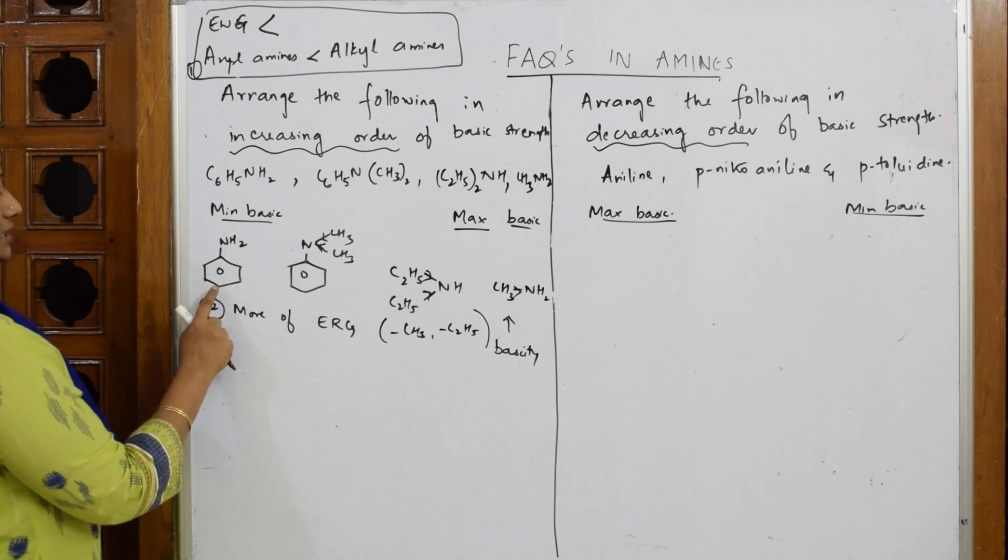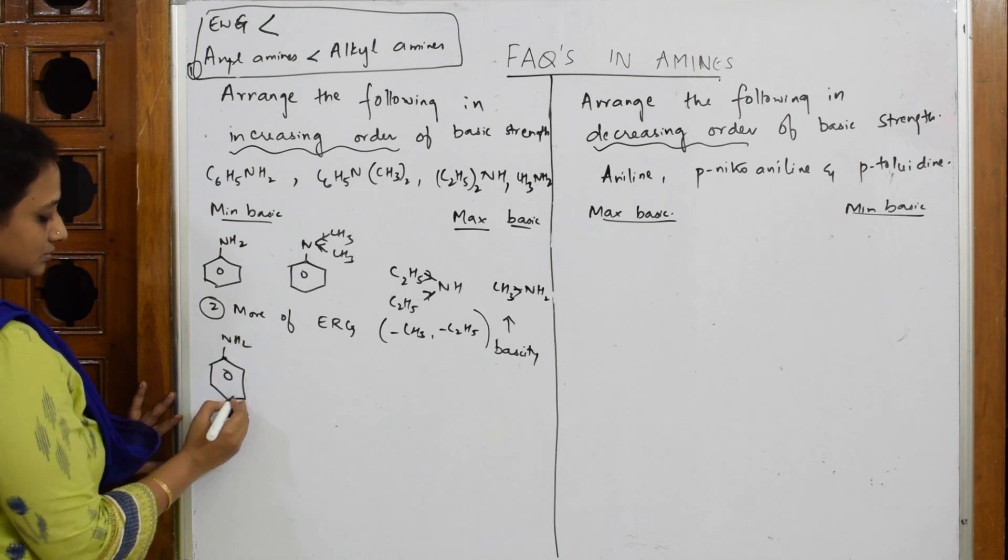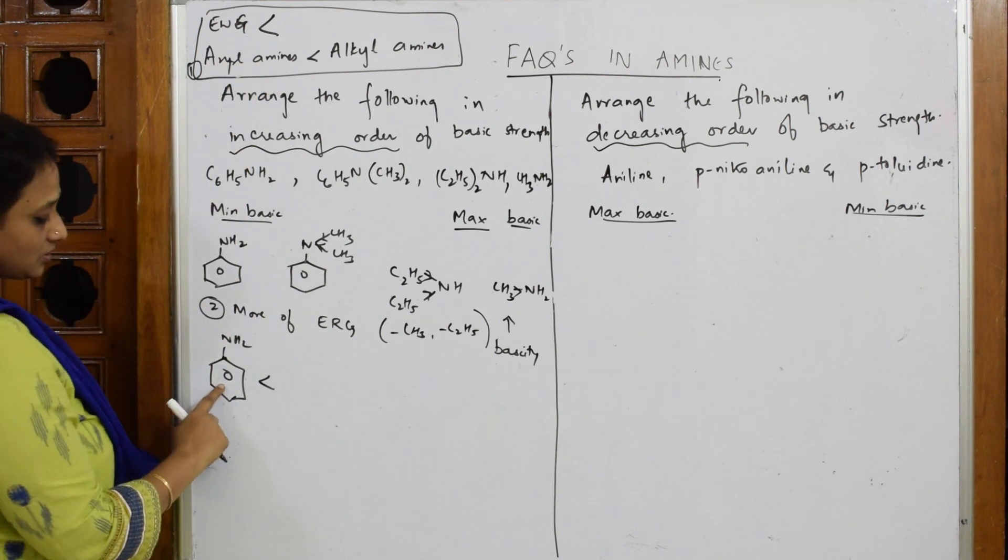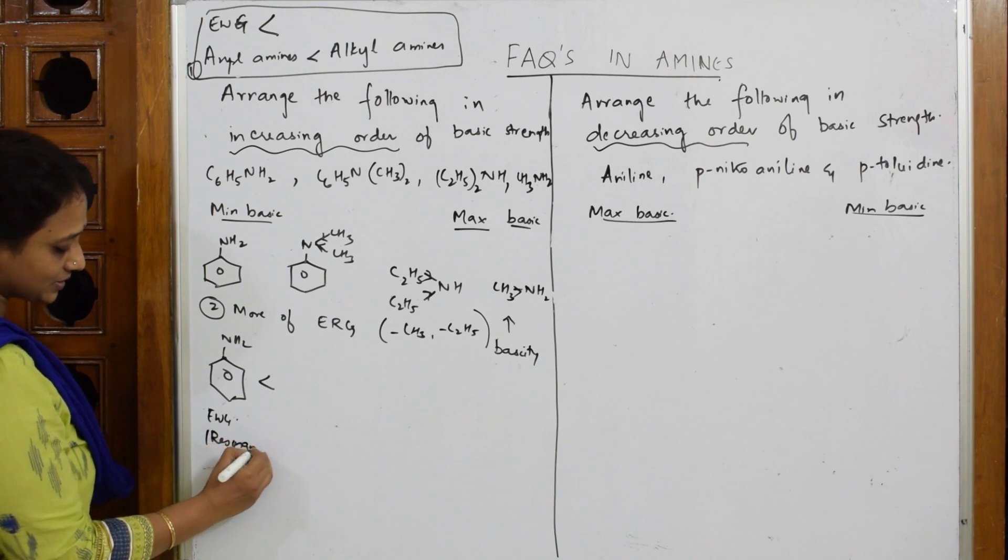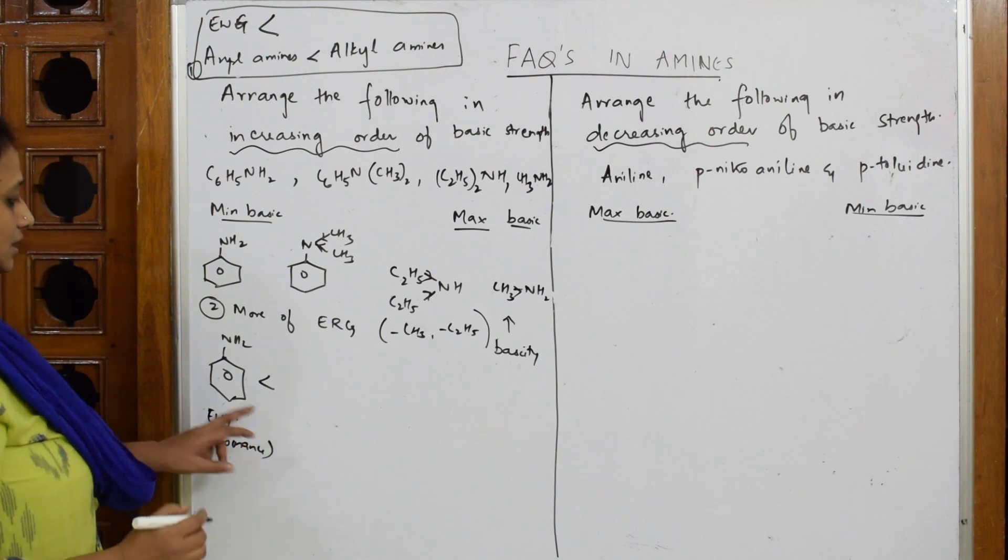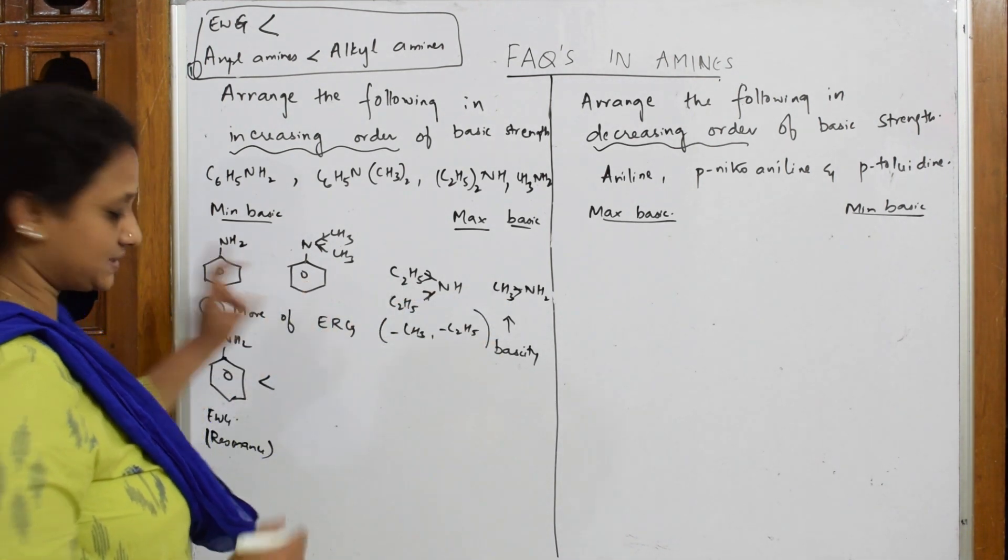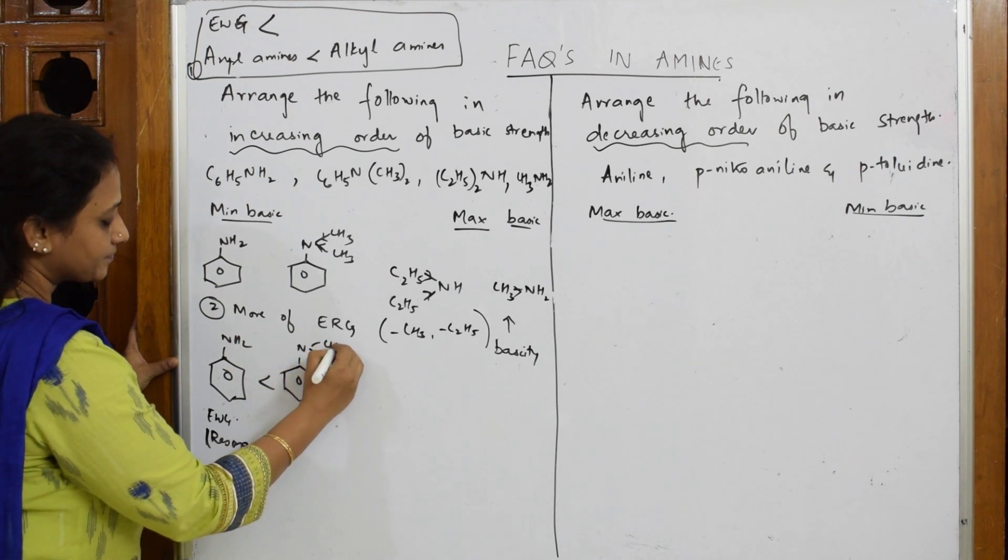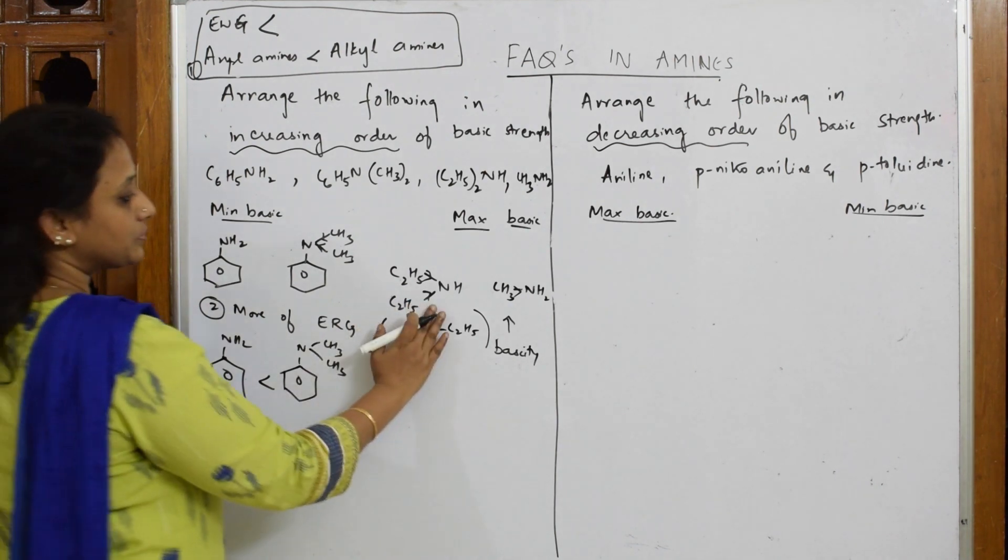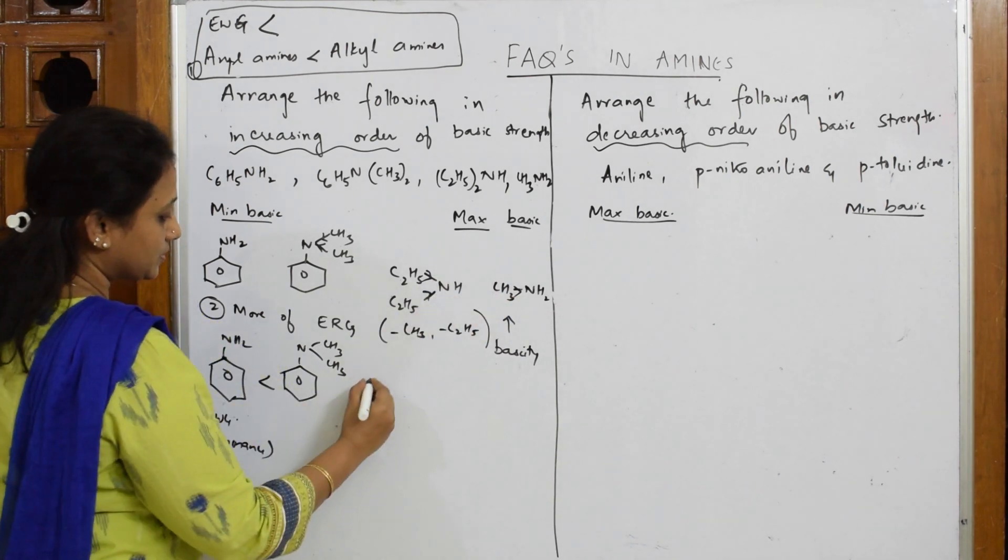and see. Make it easy enough. This one is least basic according to this concept because this EWG group is trying to drag the electrons and the electrons participate in resonance. Done. Next, we have to compare between these. Here you have again a benzene ring, so benzene ring will be less basic. I have to compare between this and this. Here you have two alkyl groups, here we have one alkyl group, so electron density here